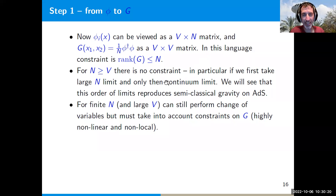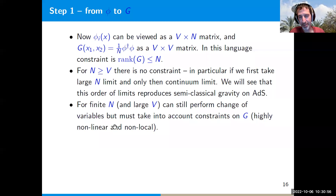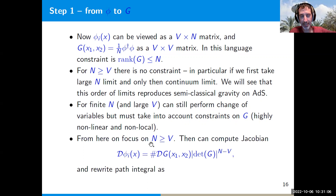This specific order of limits — first large N, then continuum — is the order that reproduces the semi-classical gravity on anti-de Sitter space with its 1/N expansion. On the other hand, for theories at finite N taking the continuum limit first, we can still change variables to the bi-local G, but we do have to take into account the complicated constraint that the rank of G is ≤ N. In most of the rest of this talk I'll focus on the case where we take large N first, which is relevant for the perturbative expansion on the gravity side.